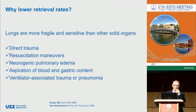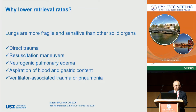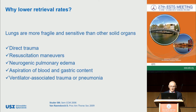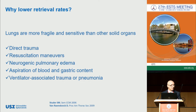Why do we have such low numbers of transplanted lungs? Compared to other solid organs, lungs are more fragile and sensitive. There are also other reasons: direct trauma, resuscitation manoeuvres, neurogenic pulmonary edema, aspiration of blood, and ventilator-associated trauma.